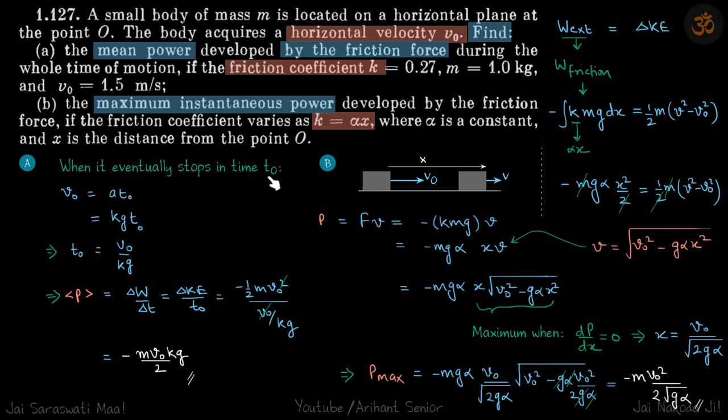Work done by friction in this case will be simply the change in its kinetic energy, because all the kinetic energy is turned into work done by frictional force. Work done divided by total time t₀ will give us mean power.